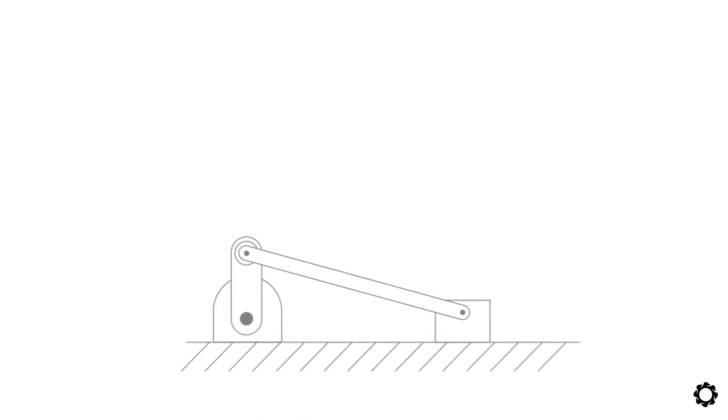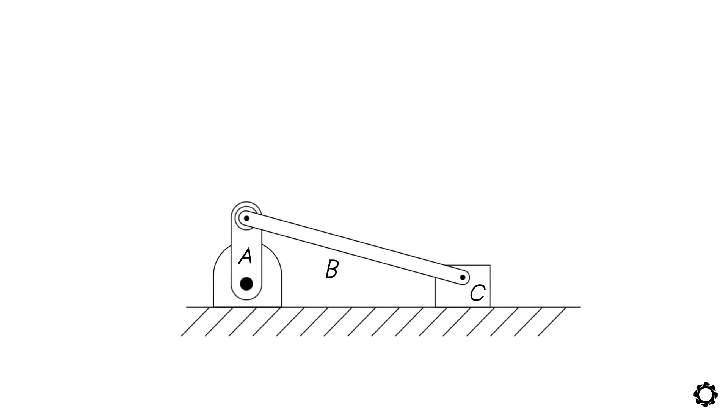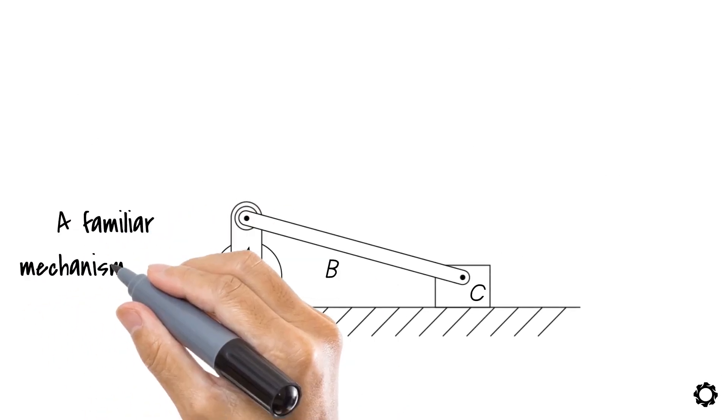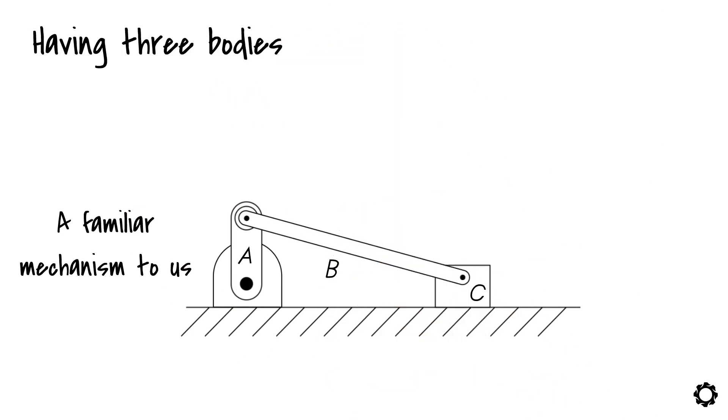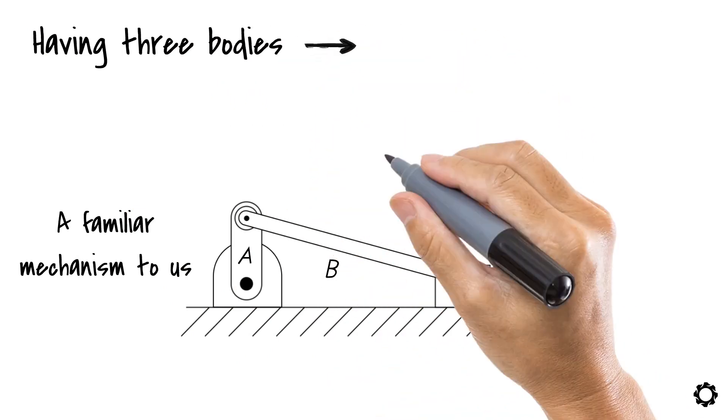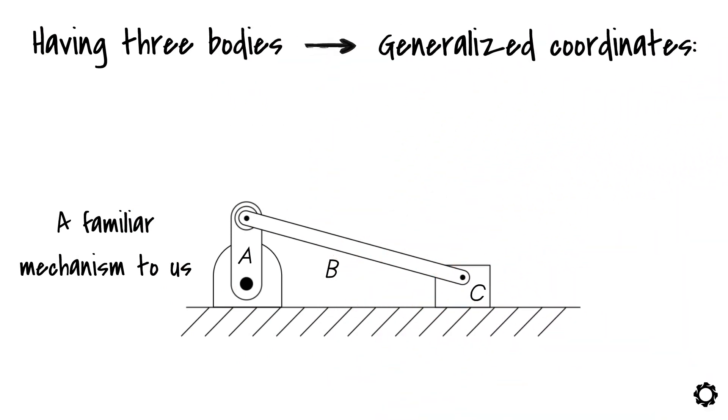Let's bring in a planar crankshaft mechanism. This is already a familiar mechanism to us. Having three bodies, let's define right away our set of generalized coordinates as we have previously done.